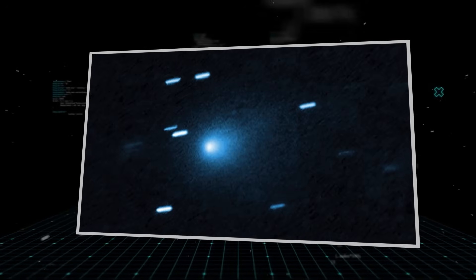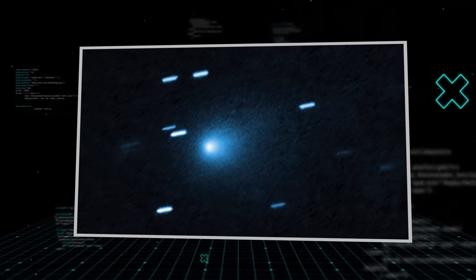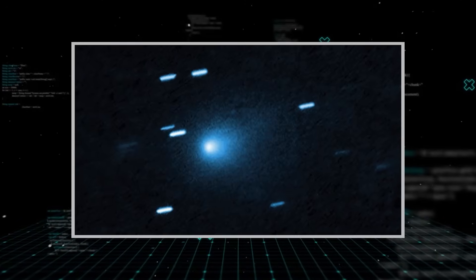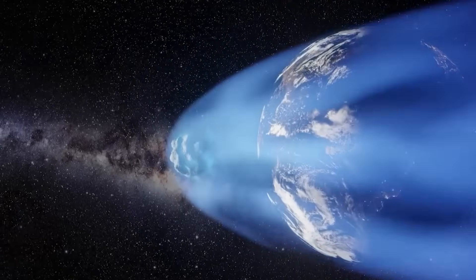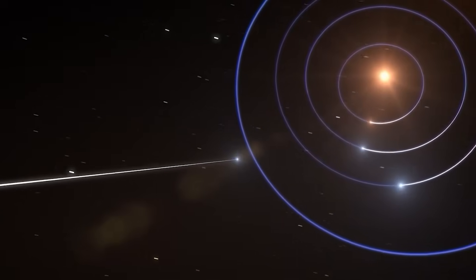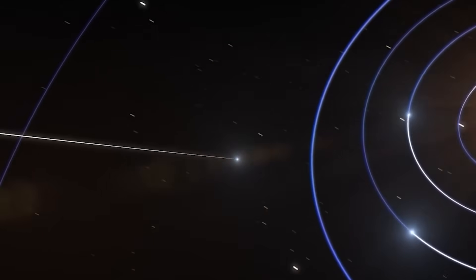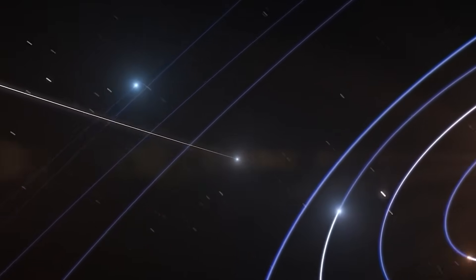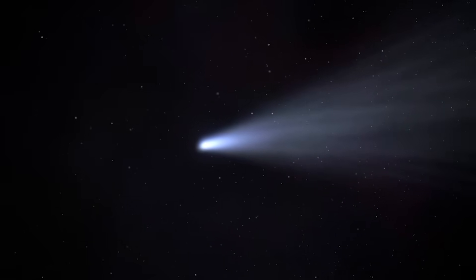When 3-Eye Atlas was first catalogued, it was immediately obvious that this was no ordinary visitor. Objects from outside our solar system don't usually pass so close to Earth. They blaze by at wild angles on unpredictable paths, and then disappear forever into the black.